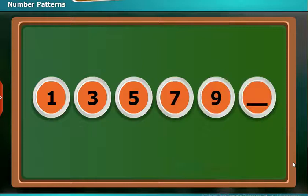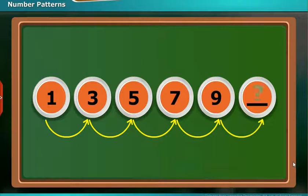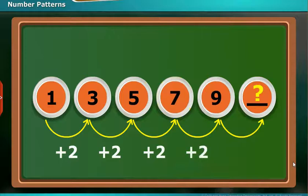In another example, here is a number pattern. Look at the sequence of numbers. Can you guess the next number? In this number pattern, start at one and add two each time. One plus two is equal to three. Three plus two is equal to five. Keep adding two each time. The next numbers are seven and nine. After the number nine, the next number will be nine plus two equal to eleven. This number pattern is an increasing number pattern by the rule of addition of two.